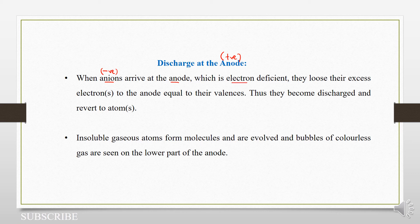remember this is positively charged because it's electron deficient — it has no electrons or it has fewer electrons. So these negatively charged ions will lose their excess electrons to the anode, equal to their valences.